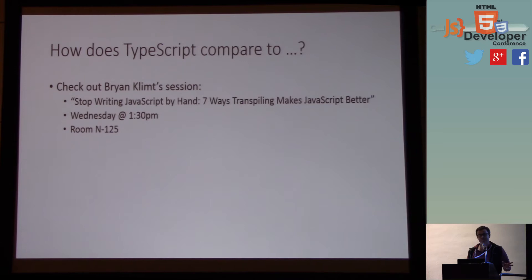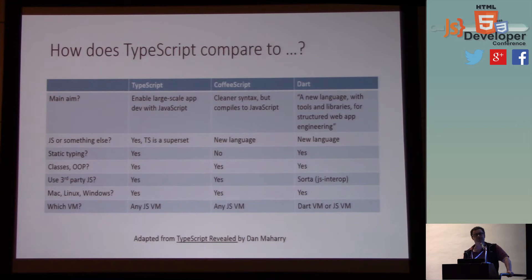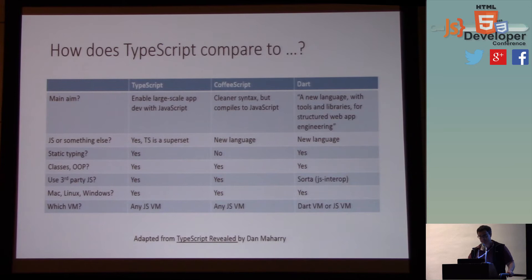The topic of types comes up often, and people ask how TypeScript compares to other languages. After this talk, Brian Klimt of Parse/Facebook is giving a talk called 'Stop Writing JavaScript By Hand: Seven Ways Transpiling Makes JavaScript Better.' He'll be covering how all these languages compare. There are dozens of languages that compile to JavaScript — a GitHub repository lists them all — but I'm going to call out two: CoffeeScript and Dart.